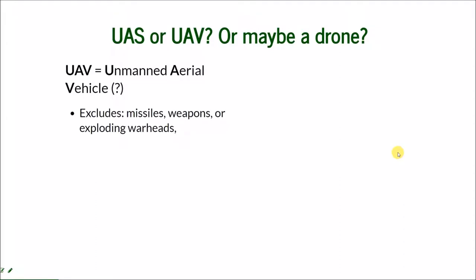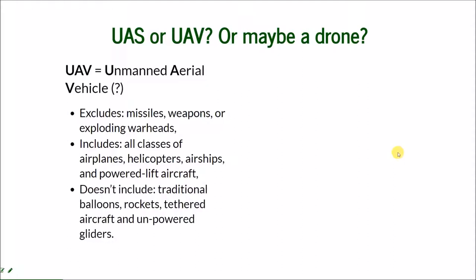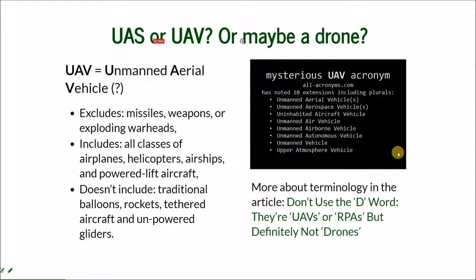There is also confusion about what the unmanned aerial vehicle actually entails. Does it include everything that flies without a person on board? Not quite. The community agreed it does not include missiles, weapons, and exploding warheads, but it does include all classes of airplanes, helicopters, airships, and powered-lift aircraft. It also excludes traditional balloons, rockets, and unpowered gliders — even though the first aerial imagery was taken from a balloon, we do not consider balloons as UAVs or UAS today.